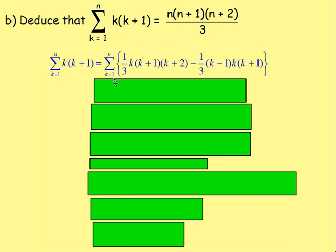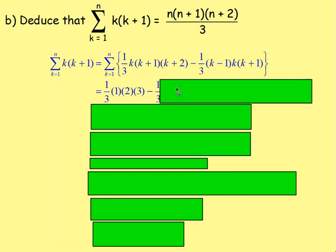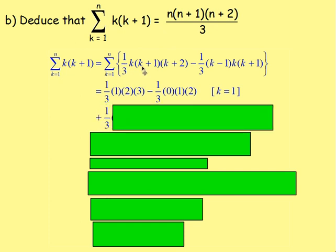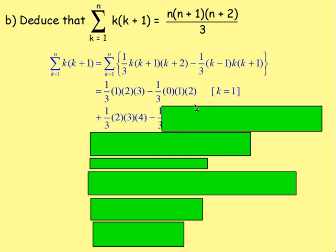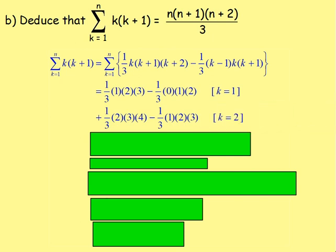We start substituting the values of k. When k equals 1: we have one third times 1 times 2 times 3, take away one third times 0 times 1 times 2. When k equals 2: we have one third times 2 times 3 times 4, take away one third times 1 times 2 times 3.